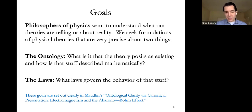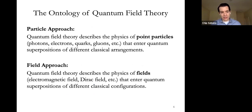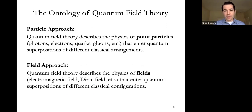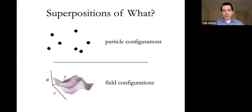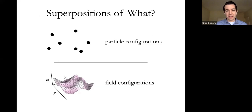If you try to be precise about quantum field theory, you have at least two particularly appealing options. One is a particle approach: the ontology of quantum field theory consists in quantum particles—photons, electrons, quarks, gluons—that enter quantum superpositions of different classical arrangements. The alternative is a field approach: quantum field theory describes classical fields in quantum superpositions, like the electromagnetic field and the Dirac field. The disagreement is about whether it's particles or fields entering superpositions of different configurations.